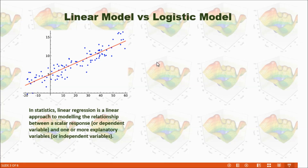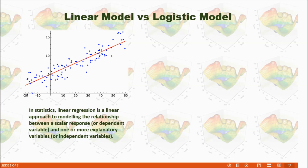Many people are familiar with the linear model. On this graph, the x-axis shows the independent variable and the y-axis shows the dependent variable. You can see that when the independent variable increases, the dependent variable also increases, so the relationship between them is linear.